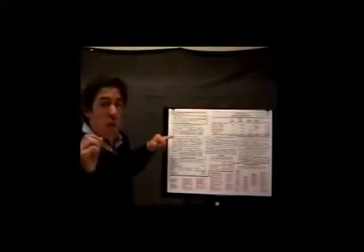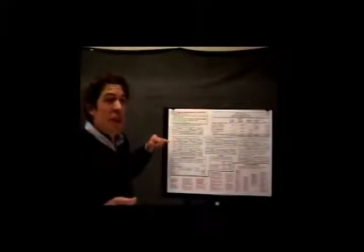Now let's get to the journal entry. We sell something, we get cash. How do you increase cash? Debit cash. Now, the treasury stock — when we bought it, was only worth $15.